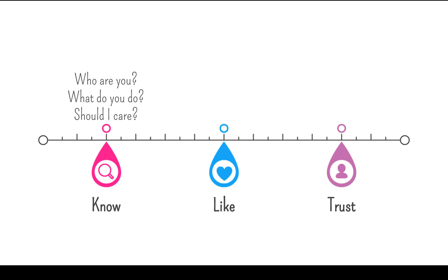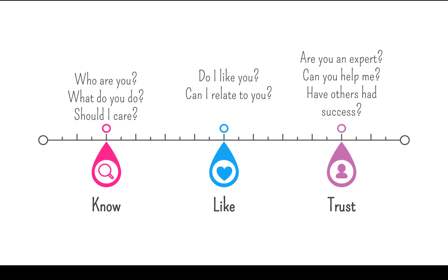The Know, Like, and Trust concept is a spectrum where people start off asking about who you are, what do you do, and why should they care. Then their consumer experience evolves to liking you — do they like you, can they relate to you, is there something about your business that makes them feel like you're the person they want to buy from? And then we move into the last part, which is the trust component. This is where the conversions happen. People are asking, are you the person that's going to be able to help me, can I trust you, have other customers had success with you or your product?